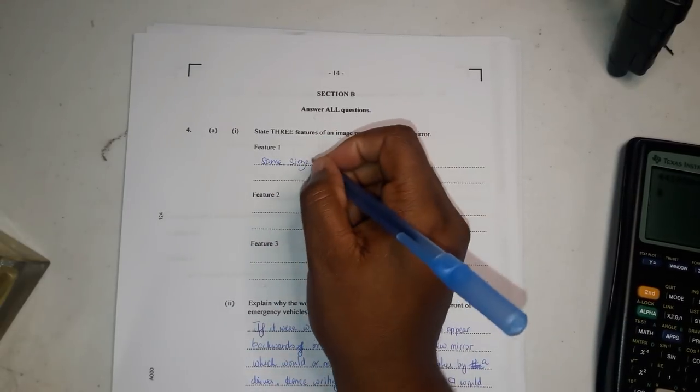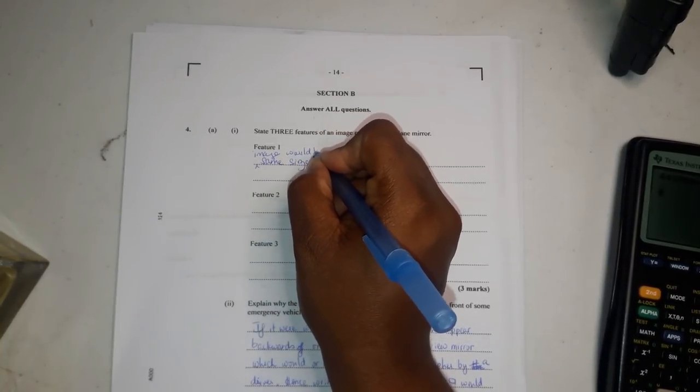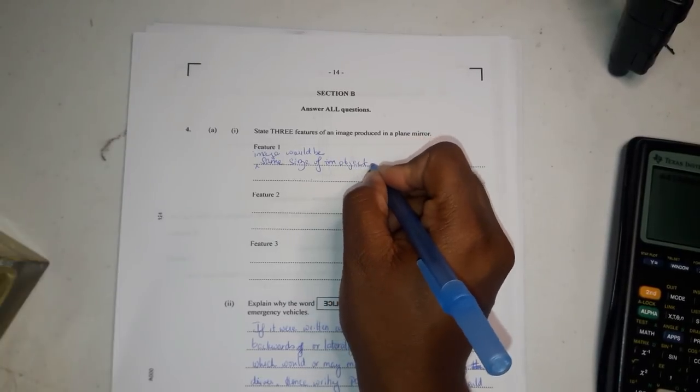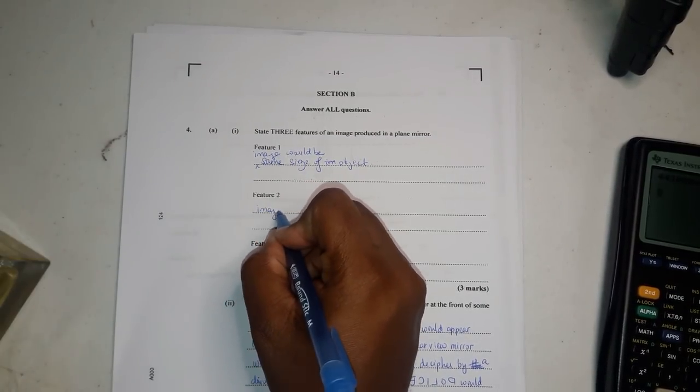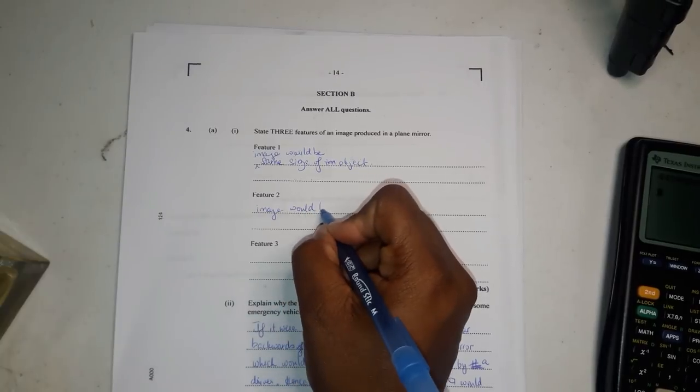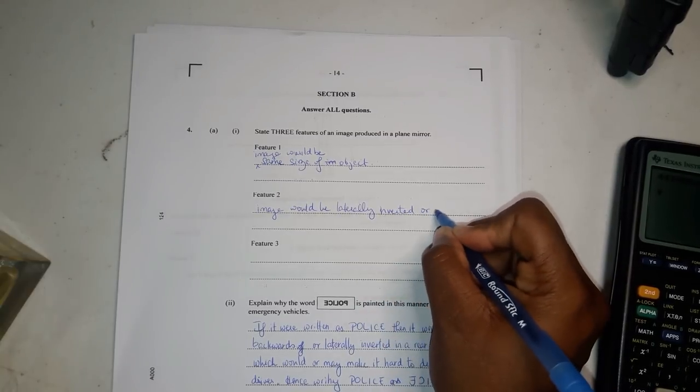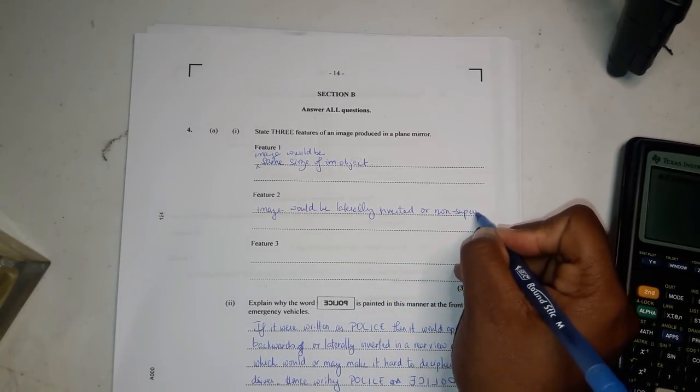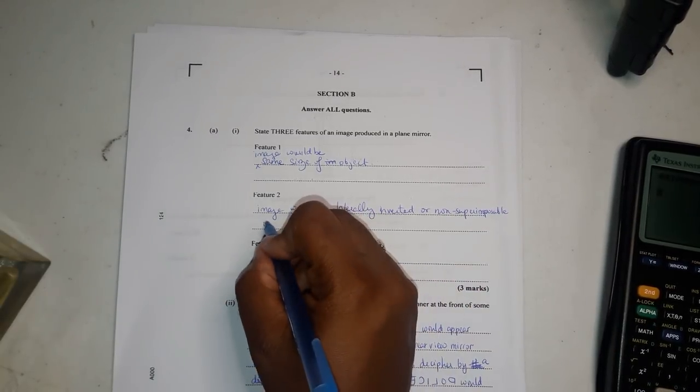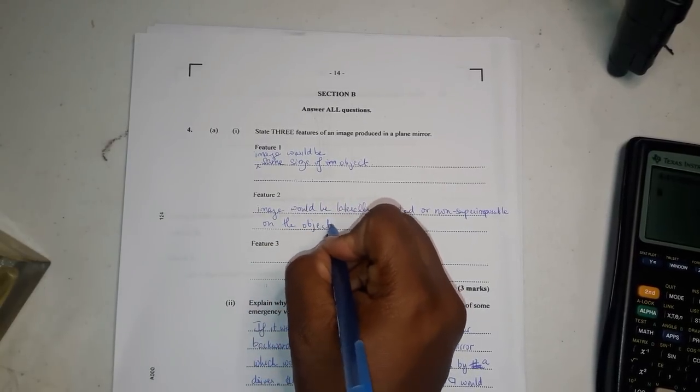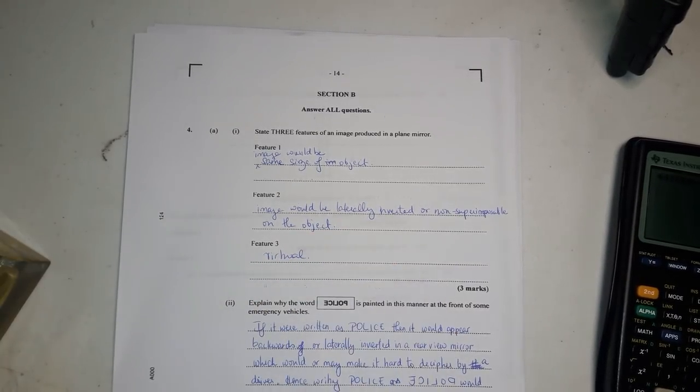Image would be the same size of object. Two, the image would be laterally inverted or non-superimposable on the object. And three, the image is virtual. It's not real.